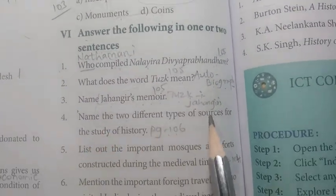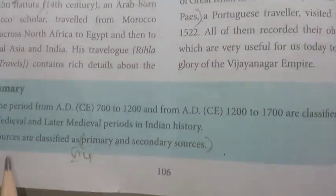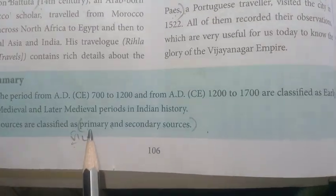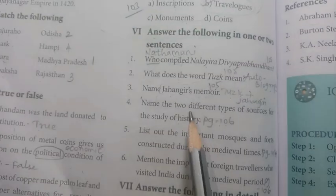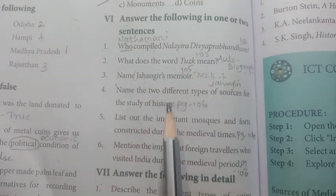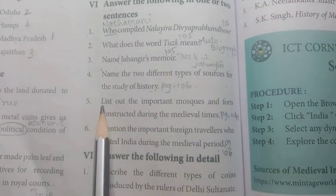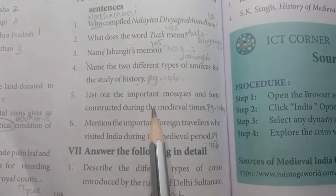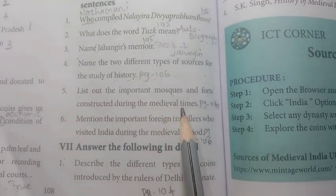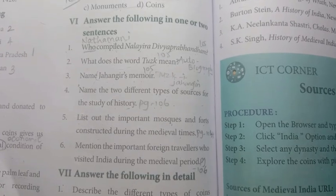Name the two types of sources for the study of history. Two types of sources - primary and secondary sources. The two different types of sources for the study of history are primary and secondary sources.